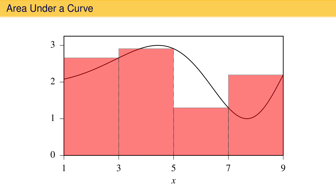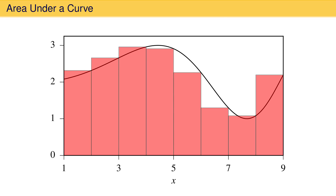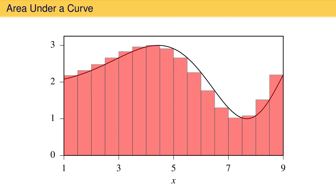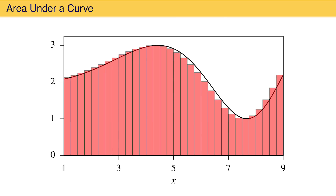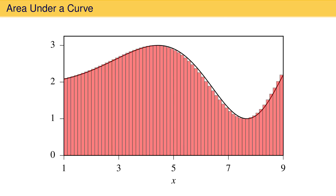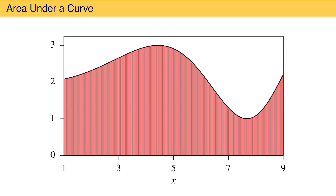We can do better by doubling the number of rectangles — once, twice, three times, four times, five times, and six times — until we have a total of 256 rectangles. These narrower rectangles fit under the curve better than the wider ones, and so the sum of their areas is a much better estimate of the area under the curve.